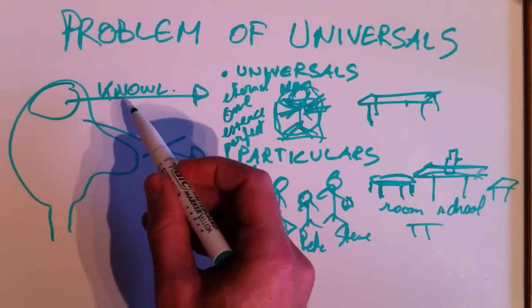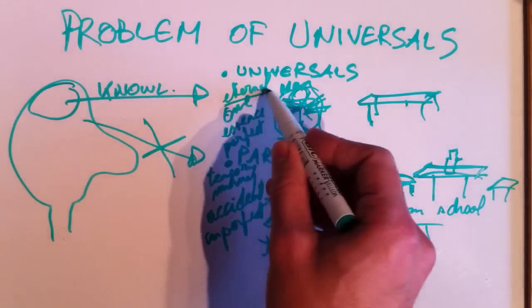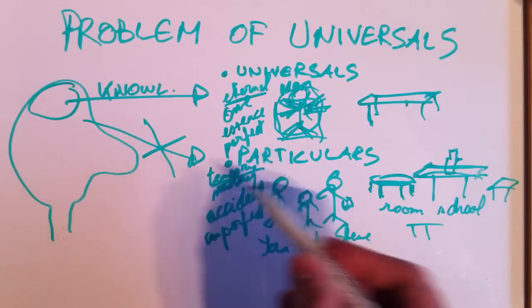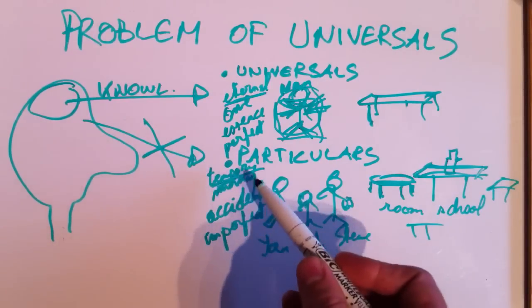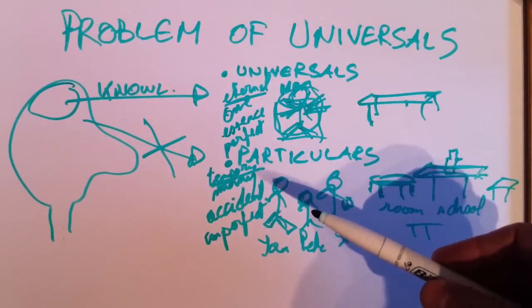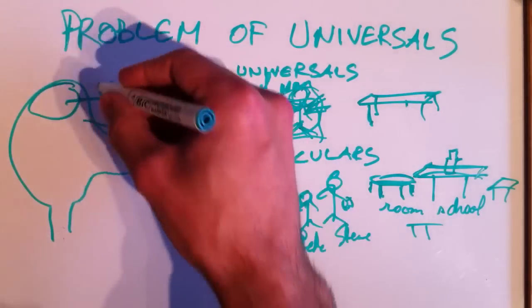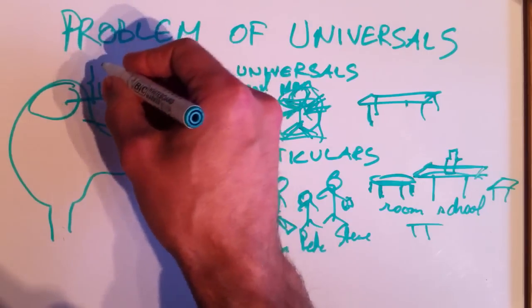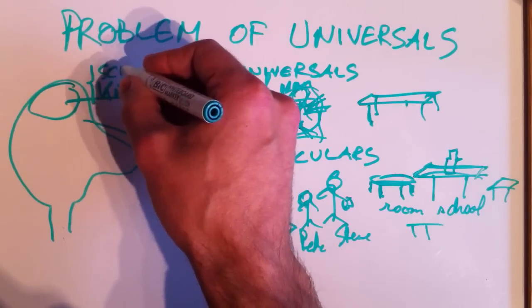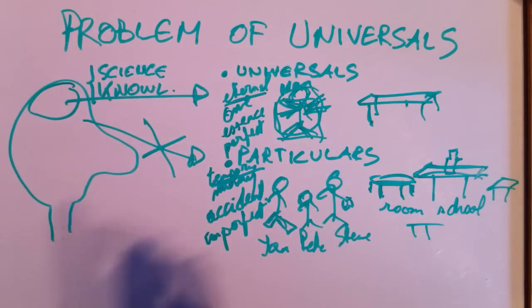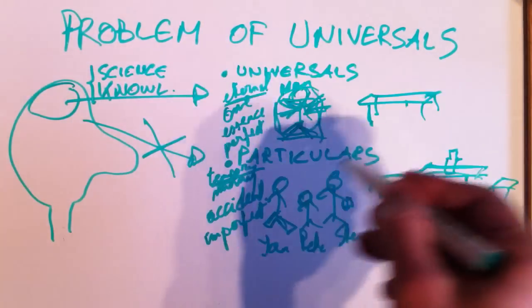And knowledge, for the ancient Greeks, must be eternal. It cannot just be temporary. If the object of knowledge changes the whole time, you cannot really have knowledge in the strict sense. Knowledge, or for the ancient Greeks that was the same as science. So we're talking about real, deep knowledge that must be about this stuff.